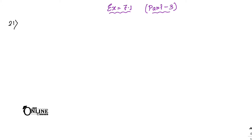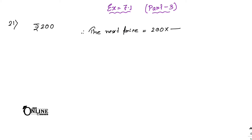Sum number 21: Increase a price of rupees 200 by 10 percent, then decrease the new price by 10 percent. Is the final price the same as the original? The original price is rupees 200. First, increase it by 10 percent, so the next price will be 200 multiplied by 110 by 100, which equals 220.